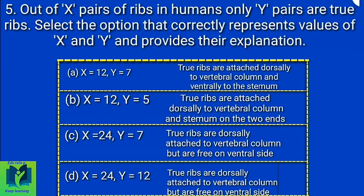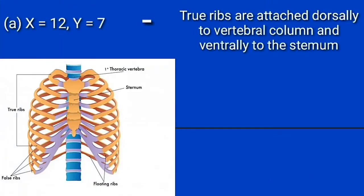Out of X pairs of ribs in humans, only Y pairs are True Ribs. Select the option that correctly represents values of X and Y and provides their explanation. Answer: X equals 12 and Y equals 7. The True Ribs are attached dorsally to the vertebral column and ventrally to the sternum.